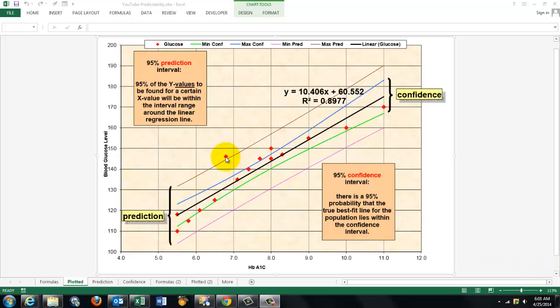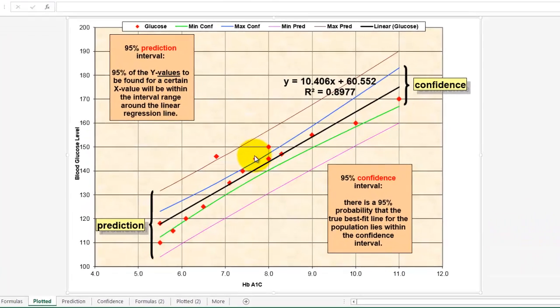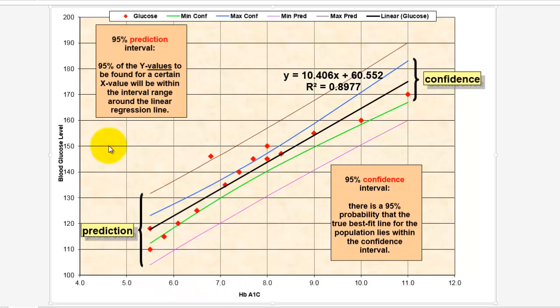Say we have a series of observations, the red spots here, for the relationship between hemoglobin A1c and blood glucose level. These are fantasy figures. We assume there is a linear regression line. After doing some curve fitting, which I won't discuss here—I did that in another video—we came up with that linear regression line.